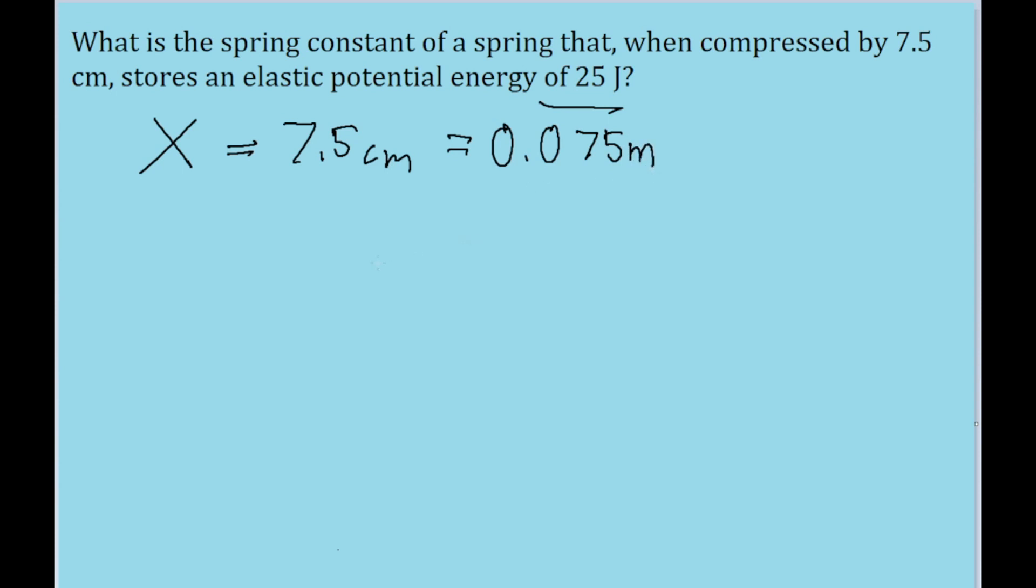Okay, now this problem is fairly simple because there's a pretty basic formula to it, which states that the elastic potential energy of something like a spring, U, is equal to one half times k, the spring constant, times x squared.